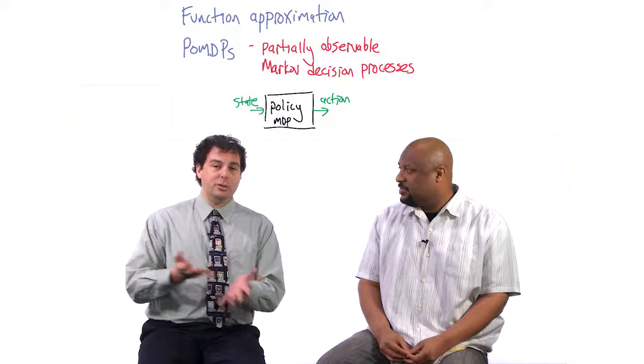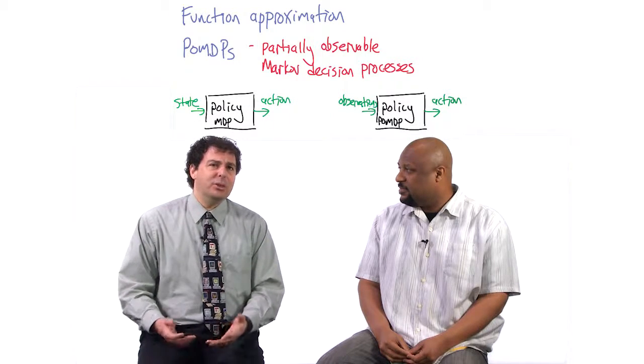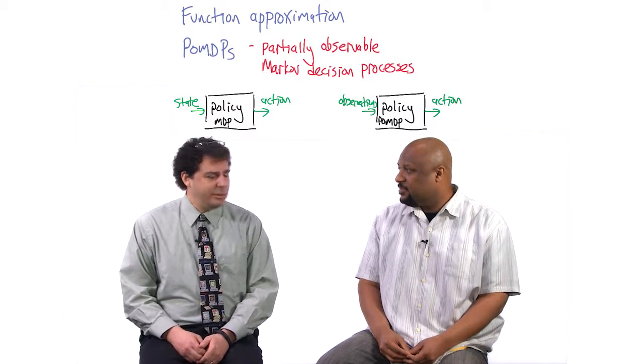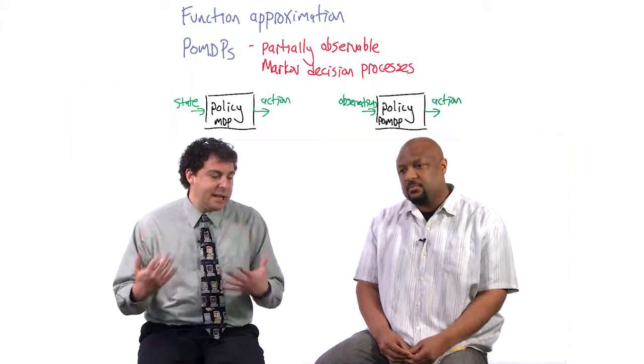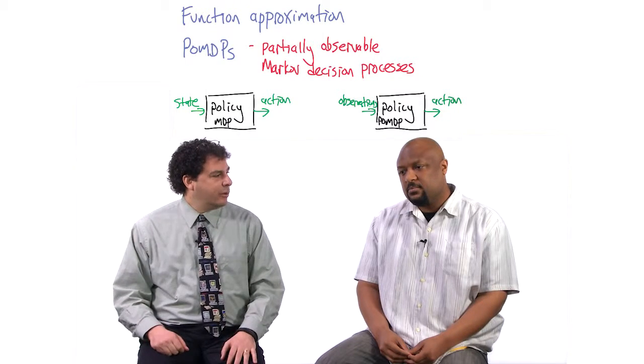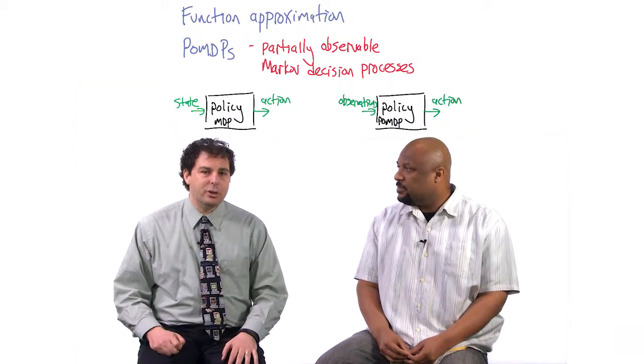But in reality, you don't really have complete state information. You have to, if you're a helicopter and you're flying through the air, you have to decide what to do based on what you can sense right now. And there may be even uncertainty about what's actually going on around you. And so you can't just use state information because you don't have it.